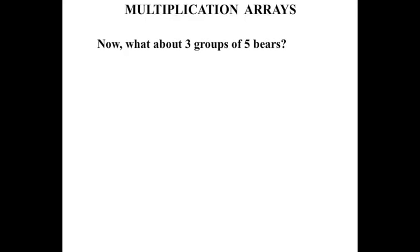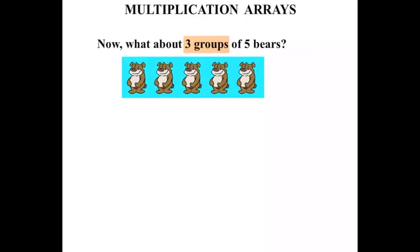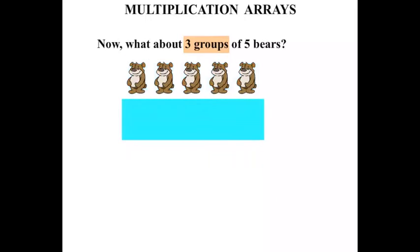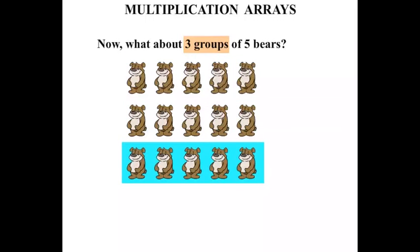Now what about three groups of five bears? So we've got five bears this time in each group — one, two, three, four, five. And this time three groups. So there's our first group, our second group, our third group. We have three groups.